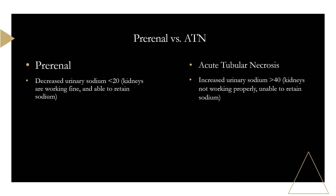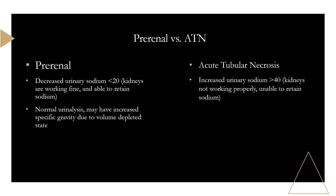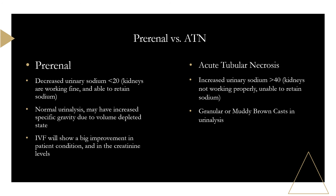In ATN, urinary sodium is increased (over 40) because the nephrons are damaged and can no longer retain sodium. Pre-renal urinalysis is essentially normal — maybe increased specific gravity from volume depletion. ATN shows granular or muddy brown casts. With pre-renal, IV fluids produce dramatic improvement and creatinine normalizes. With ATN, fluids have little effect.